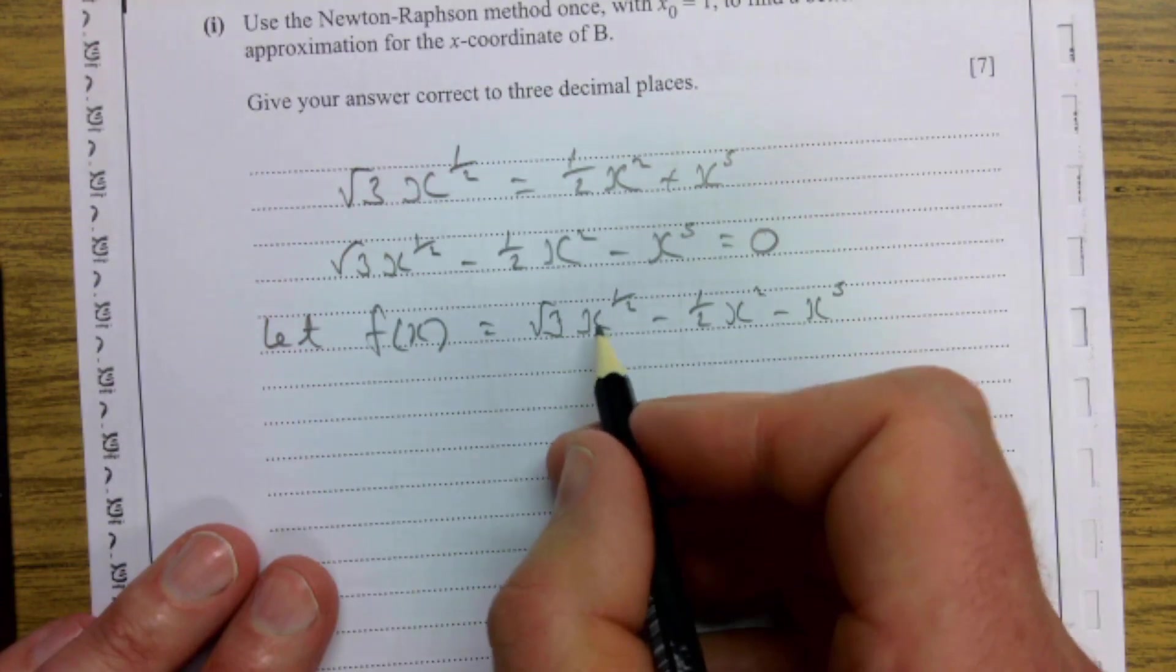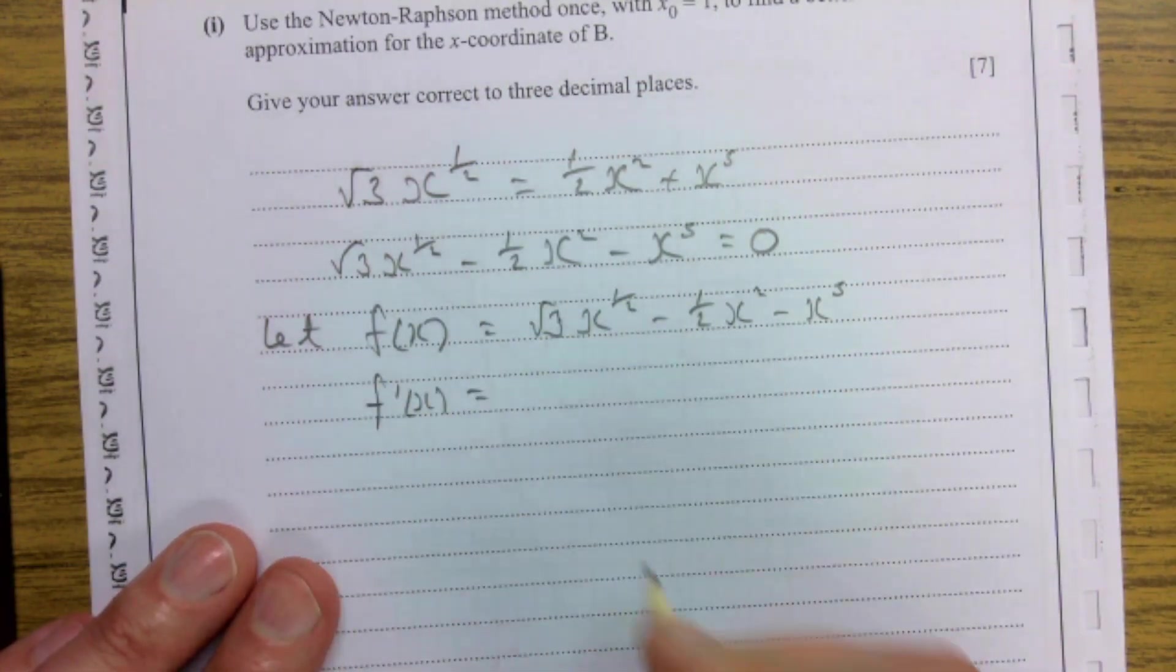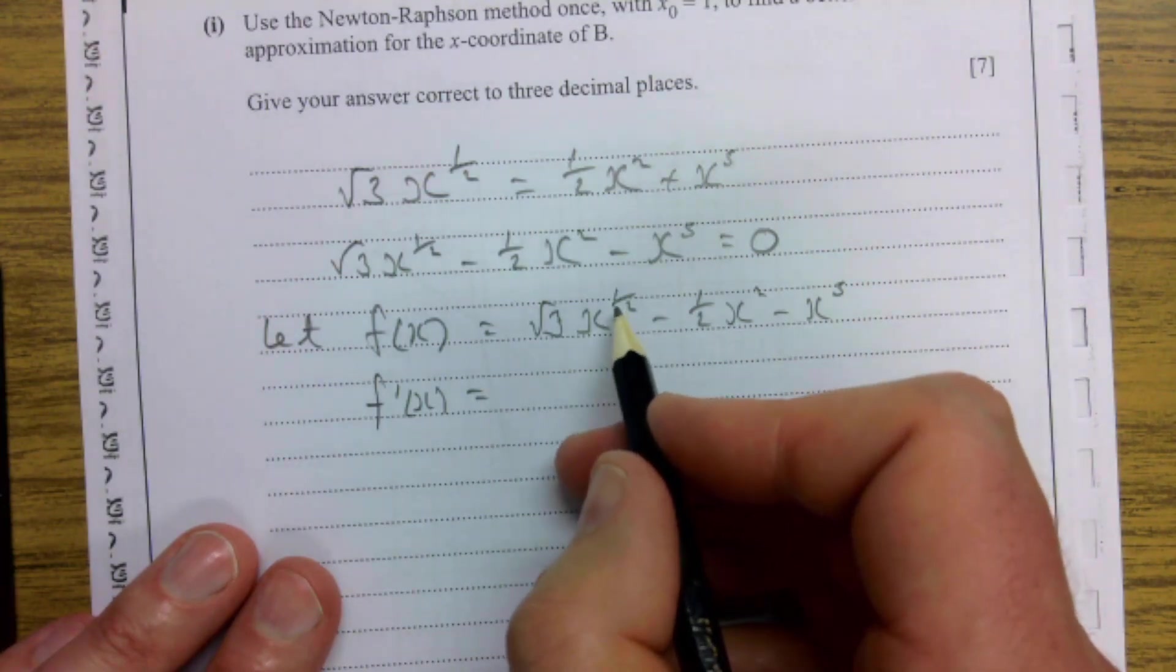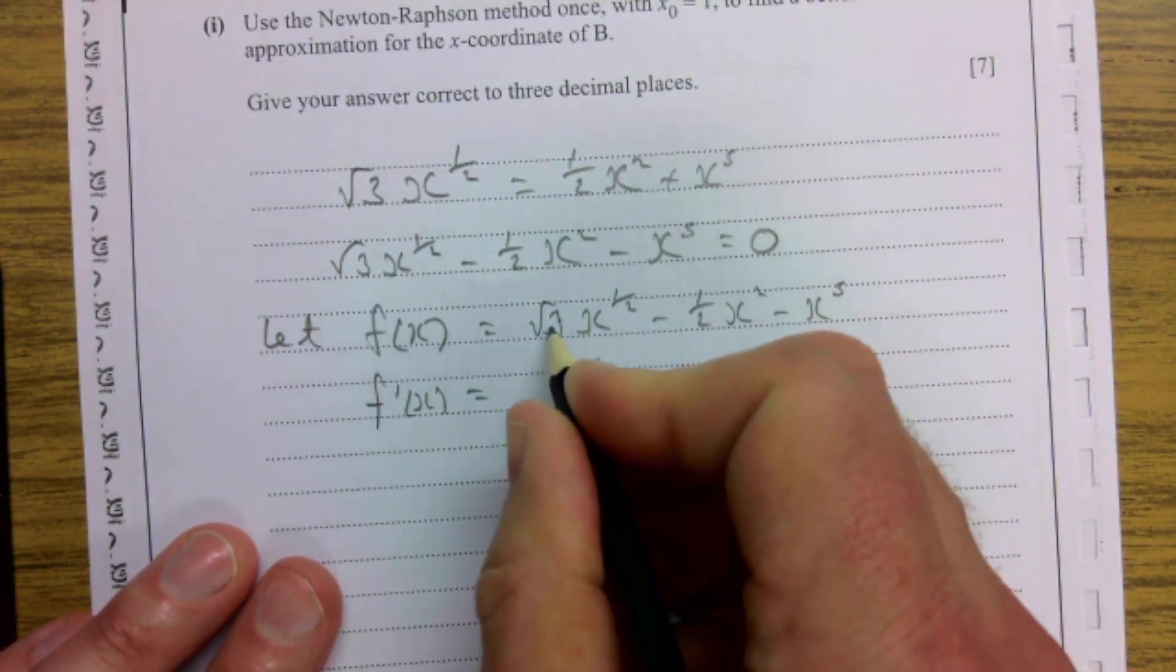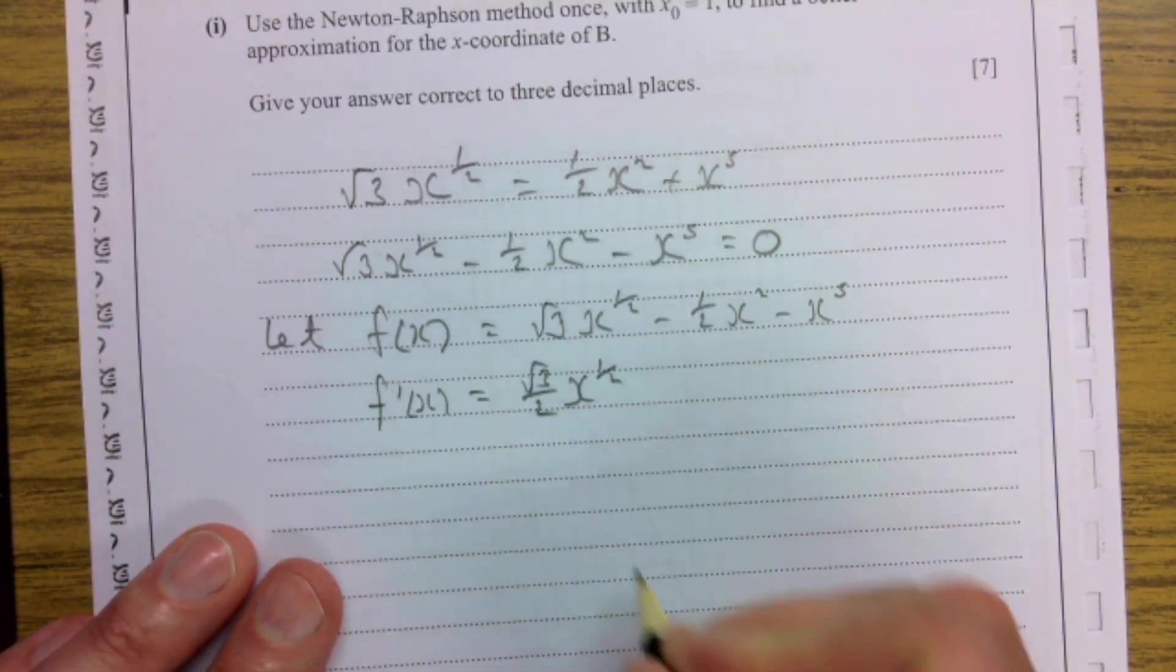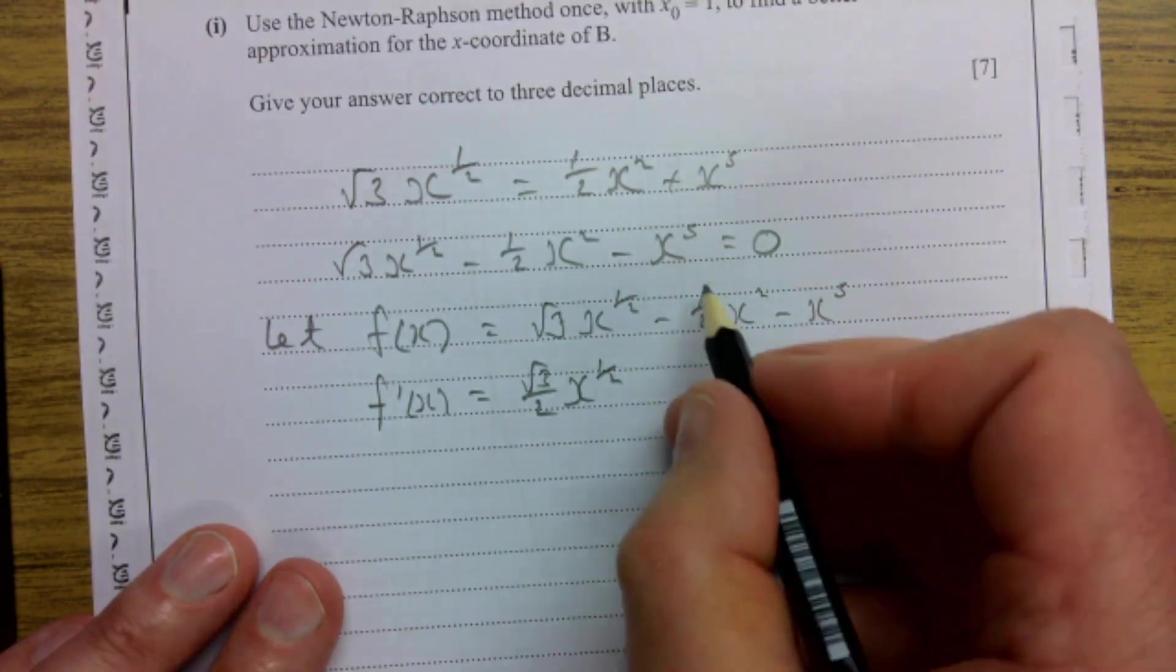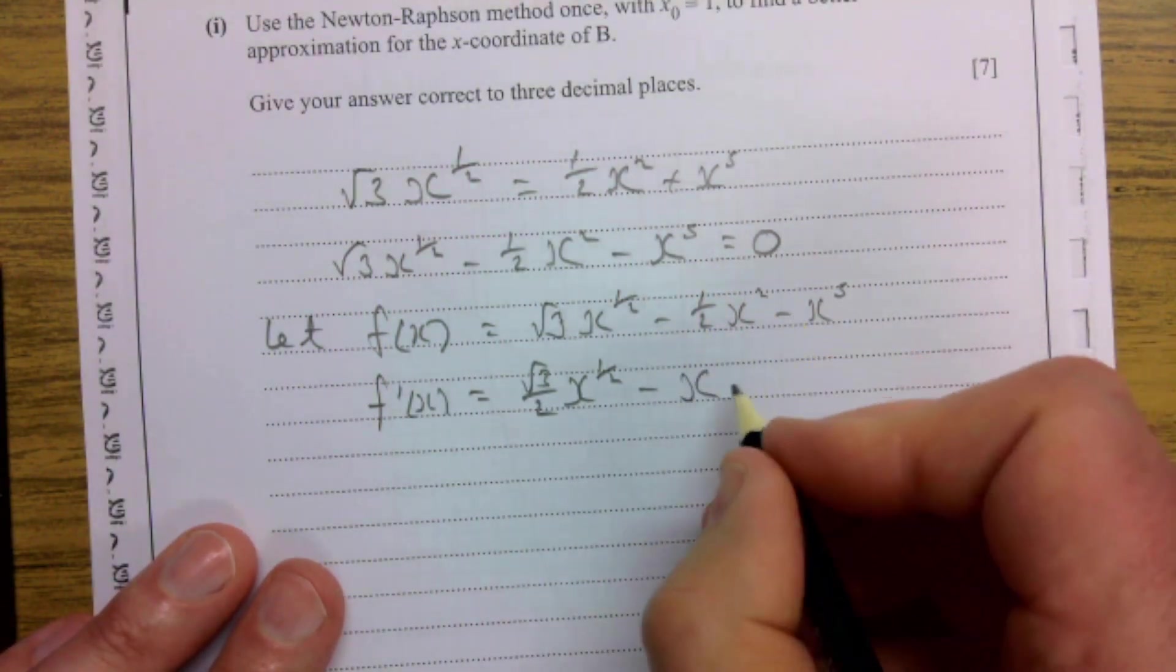We need then to differentiate this for Newton-Raphson, obviously. So let's be careful with this. I'm going to take away 1 from the power and I'm going to multiply by the old power. So that's becoming (√3/2)x^(-1/2). Differentiating this, 2 times the minus a half, so just gives me -x. And this is easy as well, -5x⁴.